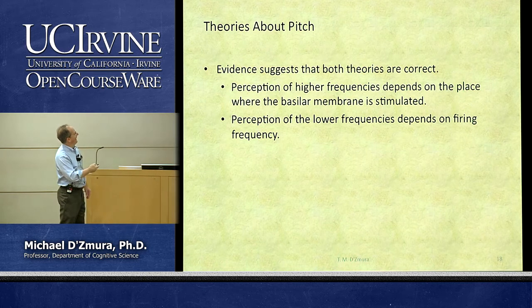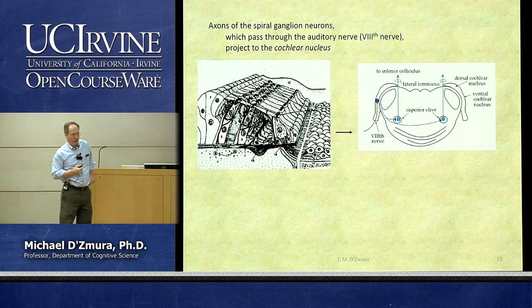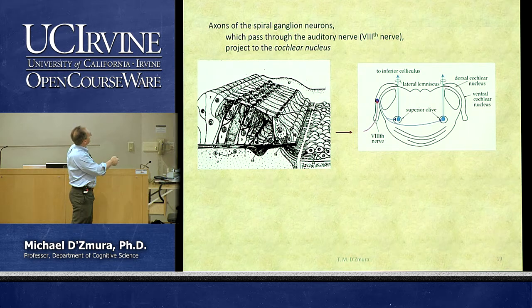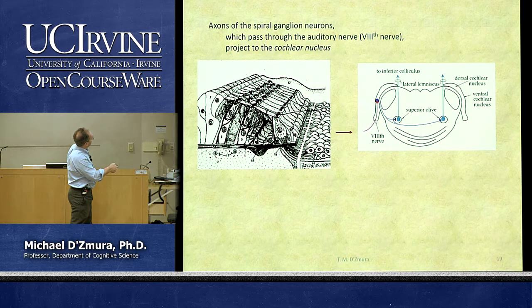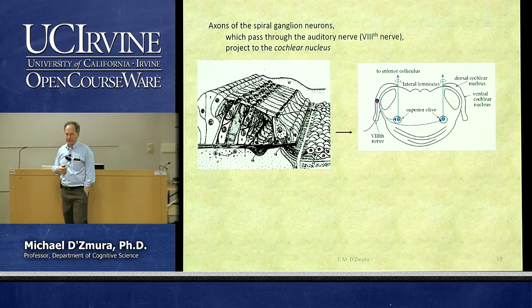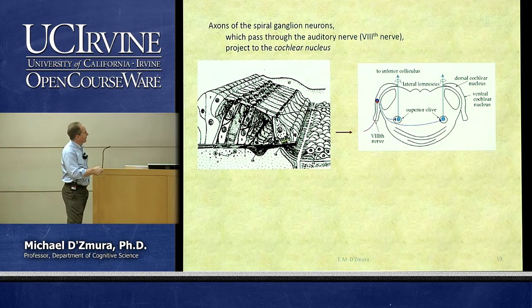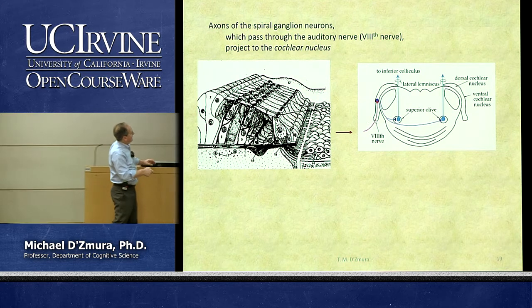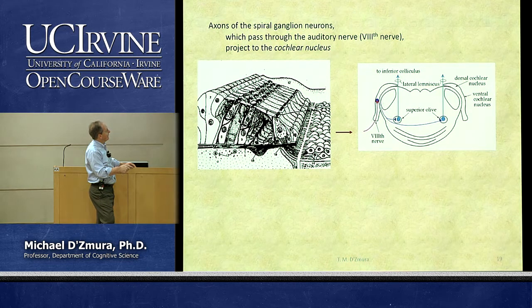Moving away from the cochlea into the brain: the inner hair cells send signals through spiral ganglion neurons, which send their dendrites into the cochlea. The axons of these spiral ganglion cells travel into the brain stem where we find the cochlear nucleus. The cochlear nucleus is present on both the left and right sides of the brain, corresponding to our two ears, so we have two cochlear nuclei.